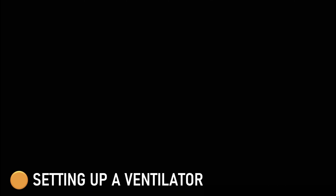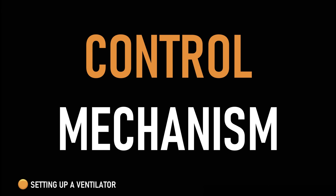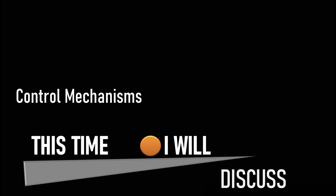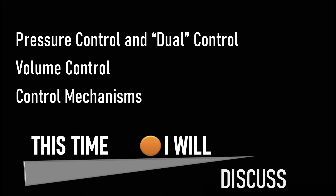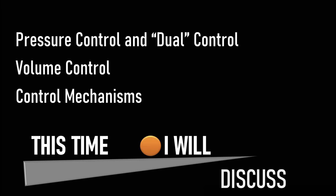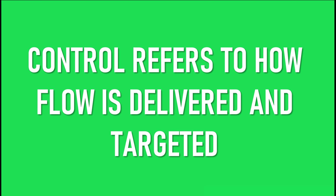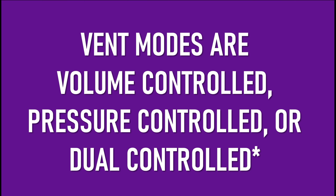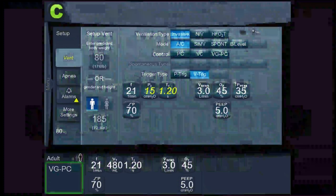So this is tutorial one: control mechanisms. I will discuss the different control mechanisms on mechanical ventilators, but they really fall into two generalized concepts. The first is volume control ventilation, where a tidal volume is given and the airway pressure is variable. Then there's pressure control ventilation, where the airway pressure is targeted and the tidal volume is variable. There is also a version known as dual control, which is volume guaranteed pressure control. The ventilator modes are volume control, pressure control, or dual control, and this is the first thing you need to decide when setting a ventilator.